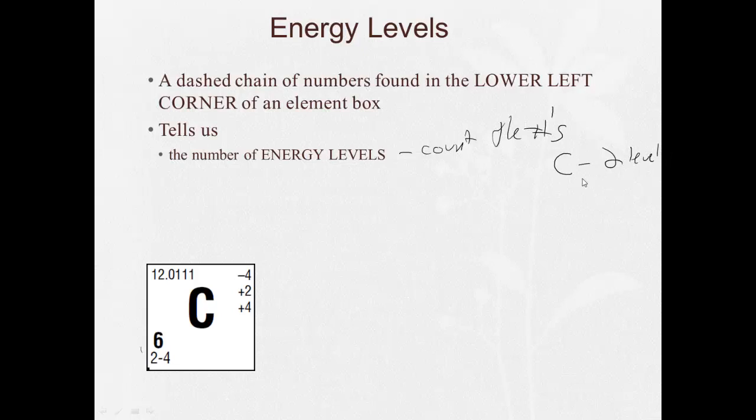You can also, if you count the row, it tells you the number of energy levels. We'll learn more about that when we do the periodic table. But hydrogen and helium are in the first row, so there's one energy level. The elements in the second row have two. The elements in the third row have three, et cetera.